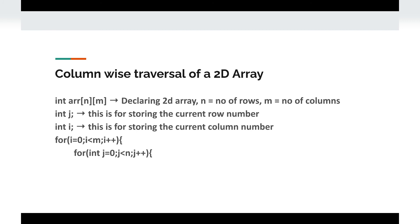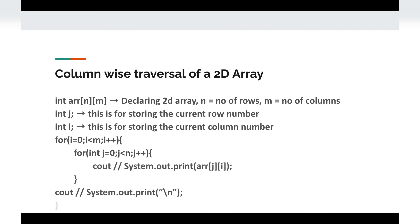In column-wise traversal, each column value comes from the i-th loop and the entire row comes from the j-th loop. Inside this we print similarly, and this is how we traverse a 2D matrix in column-wise fashion. Both implementations are quite similar.